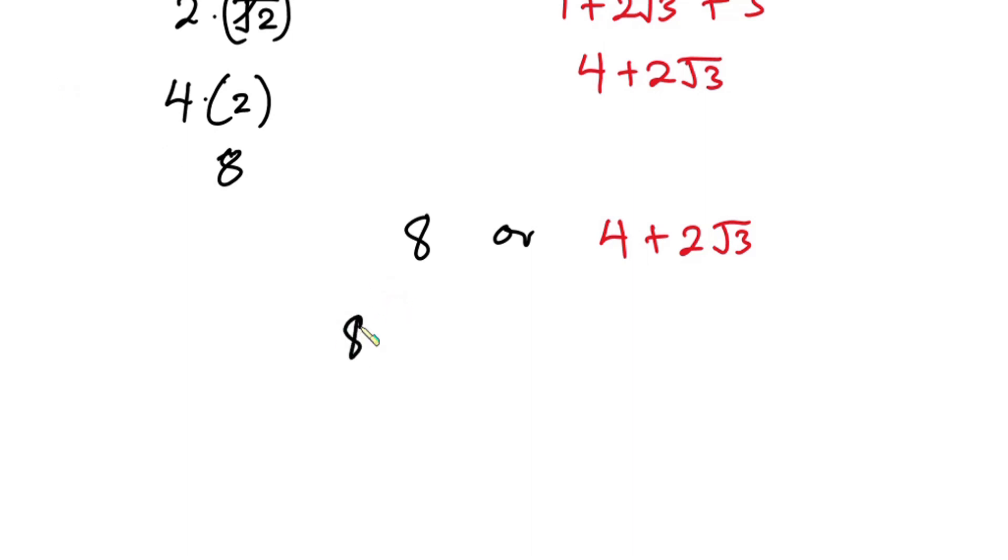I'm going to subtract 4 from each side. So we have 8-4 on this side, and 4+2√3-4 on the other. 8-4 is 4. Then on the right side, the positive 4 and negative 4 cancel each other, so we have 2√3.